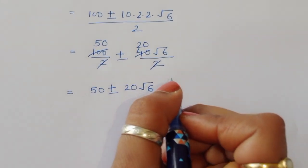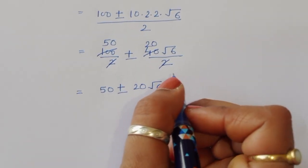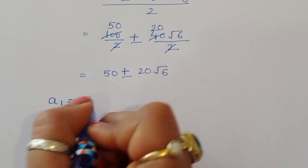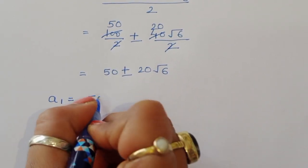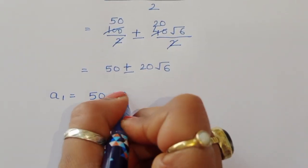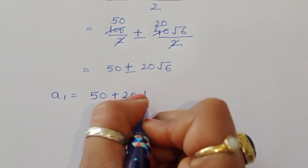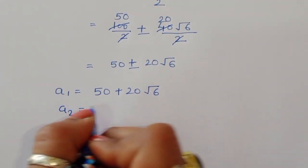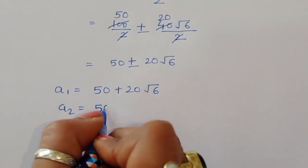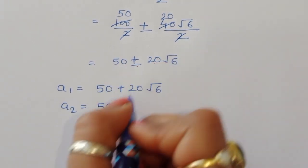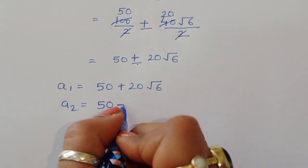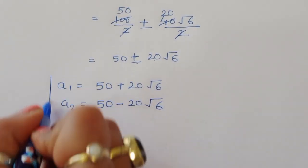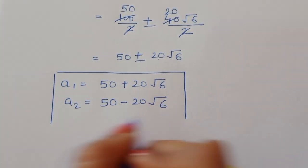So we get two values of a: a1 is equal to 50 plus 20 square root of 6, and a2 is equal to 50 minus 20 square root of 6.